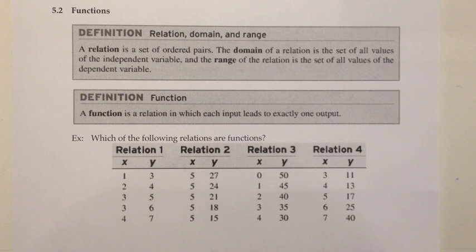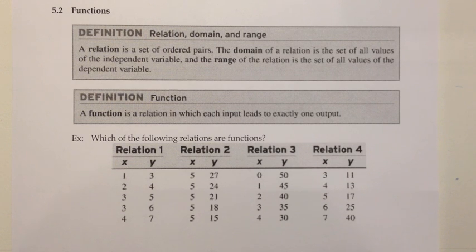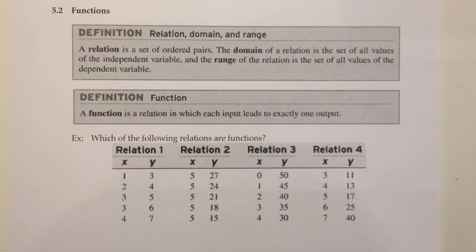Section 5.2, Functions. I'm going to start off with a few definitions. A relation is any set of ordered pairs. The domain of a relation is the set of all the values of the independent variable, and the range of the relation is the set of all the values of the dependent variable.